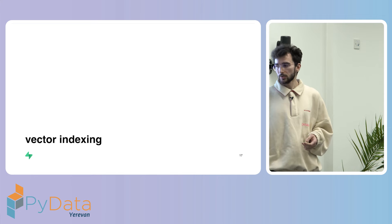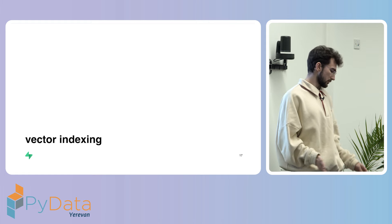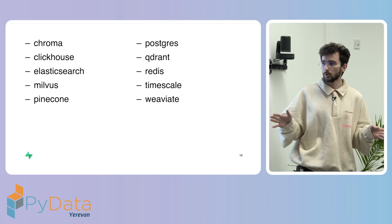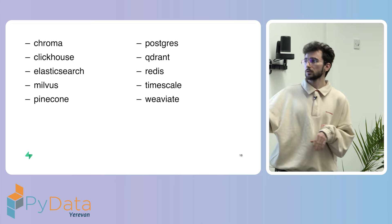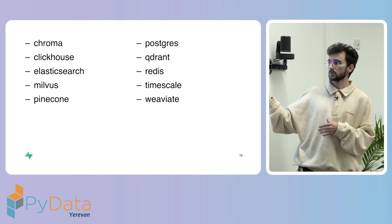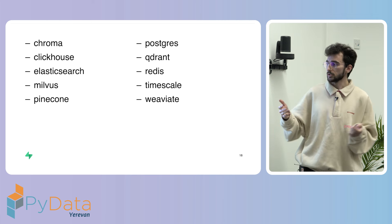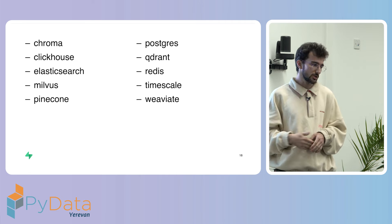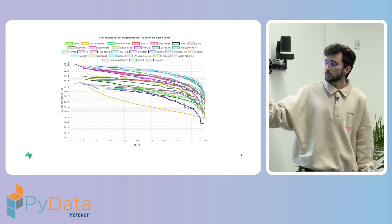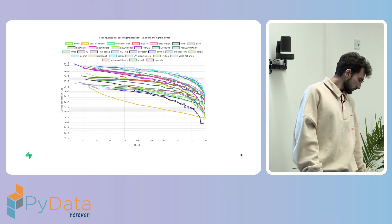You don't want to wait an hour to find relevant information. So there are vector indexes that can speed up your searches. Some databases are proprietary with custom in-house indexes like Pinecone. Some are open source like Milvus. And some are general-purpose databases like relational databases, ClickHouse as a columnar database, or TimescaleDB for time series — but they have extensions like Postgres with PG vector that allow you to store and search for embeddings.